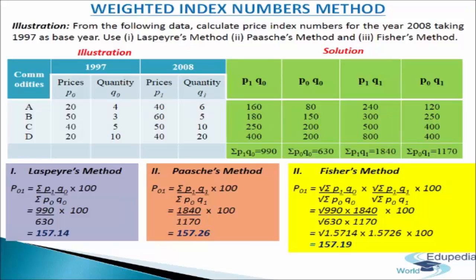Now we apply Laspeyres' method: P01 = (ΣP1Q0 / ΣP0Q0) × 100 = (990 / 630) × 100 = 157.14. For Paasche's method: P01 = (ΣP1Q1 / ΣP0Q1) × 100 = (1840 / 1170) × 100 = 157.26.